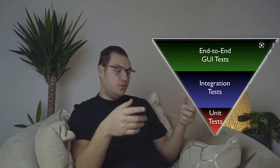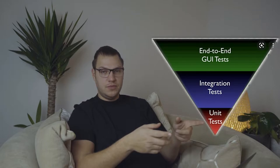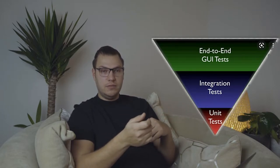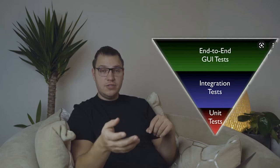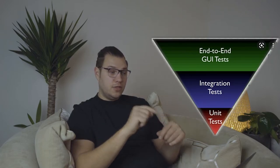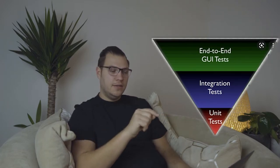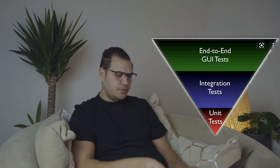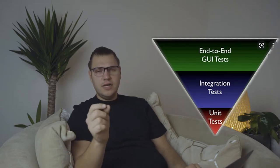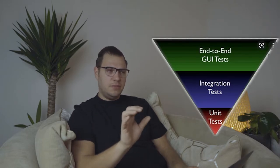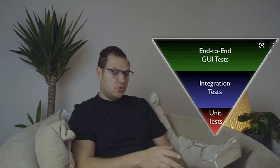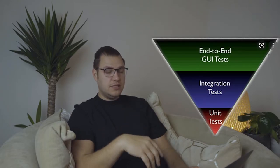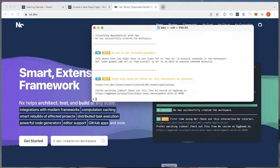When you join a new project, write end-to-end tests first and make sure all the flows work. What happens is when you deploy, a manager goes online, starts clicking through, and finds a broken flow very late. Things like broken buttons or misaligned elements get caught too late. I'll go deeper into tests in another video. Back to building the React application.